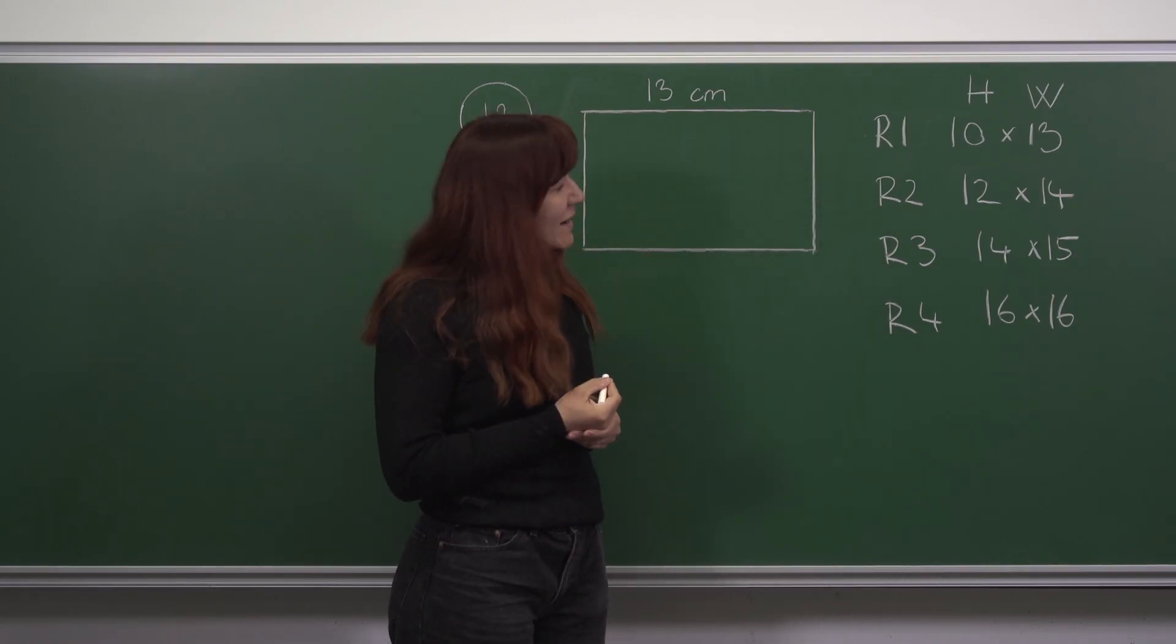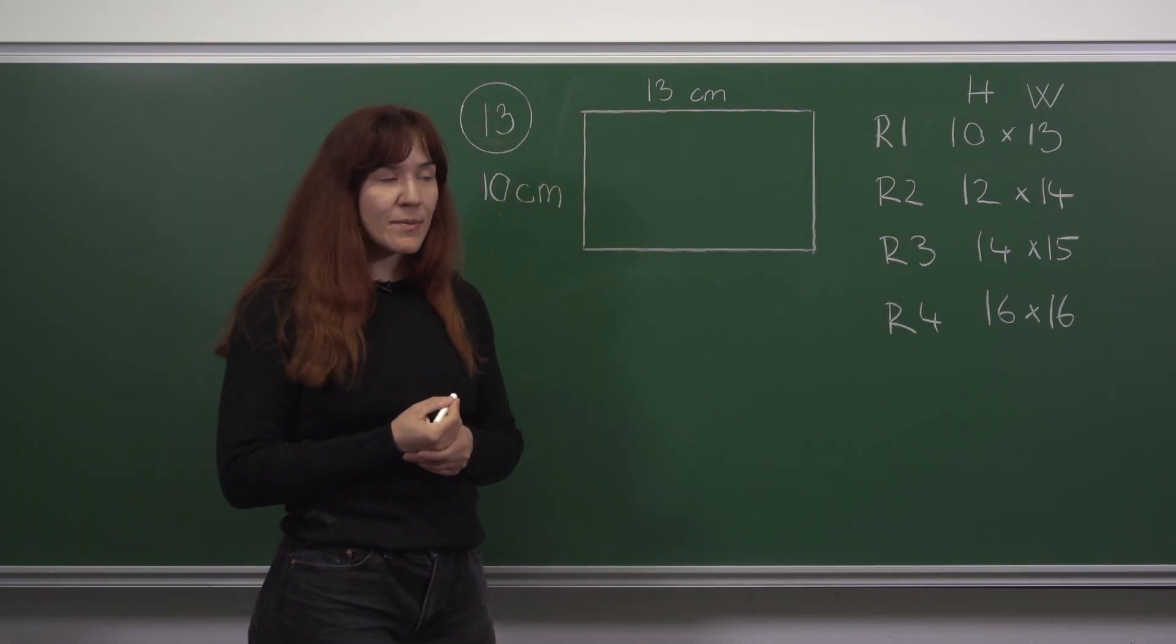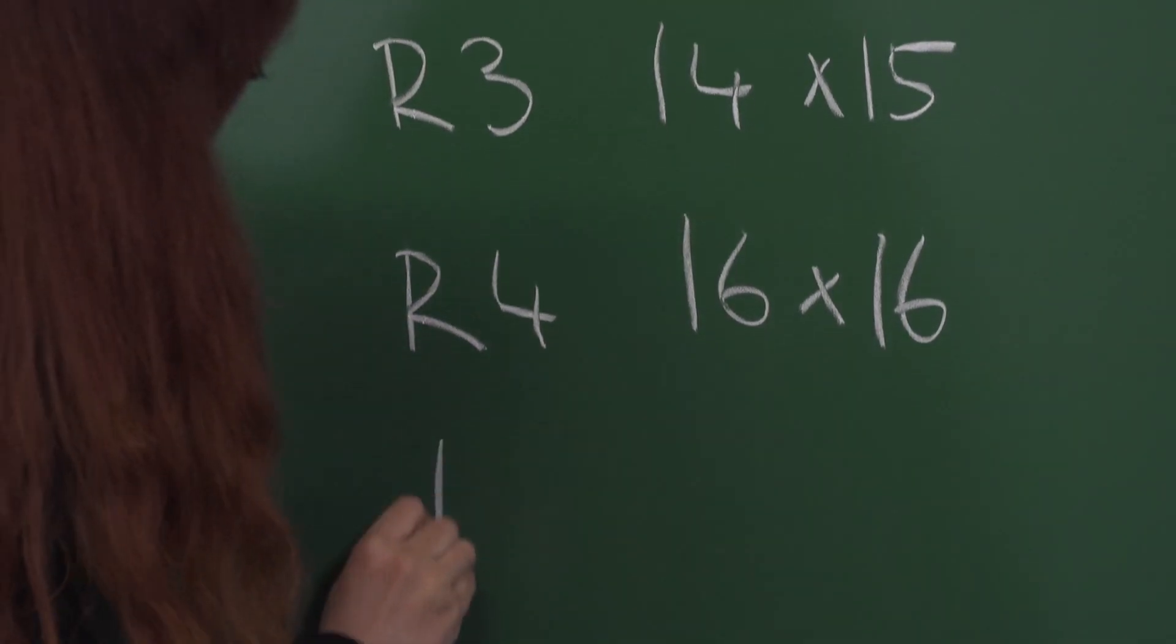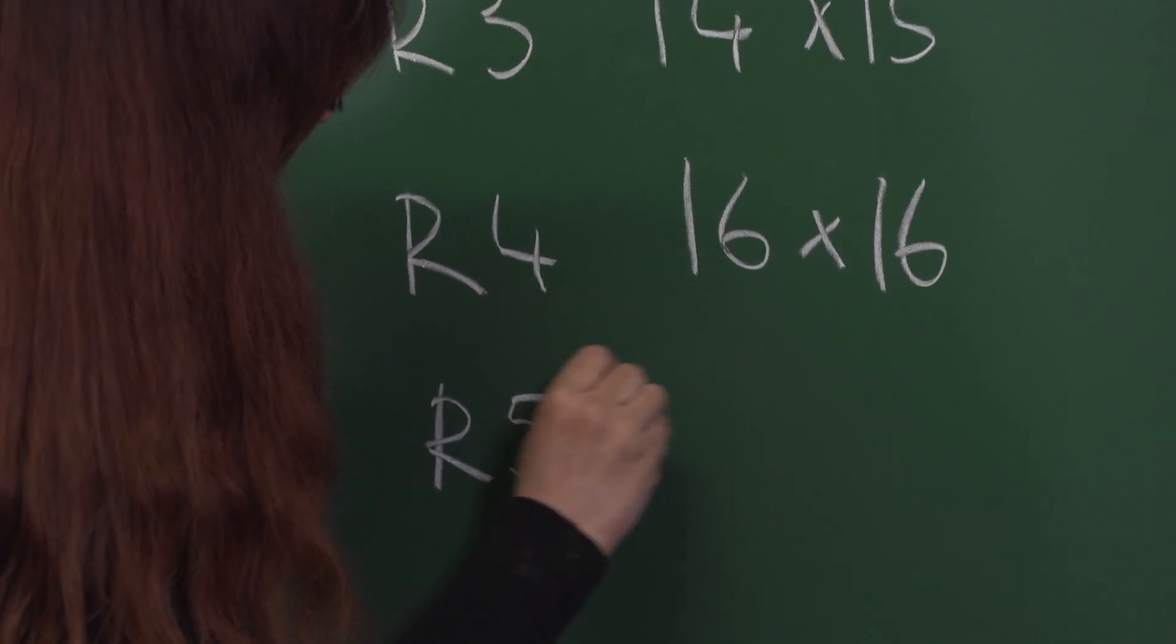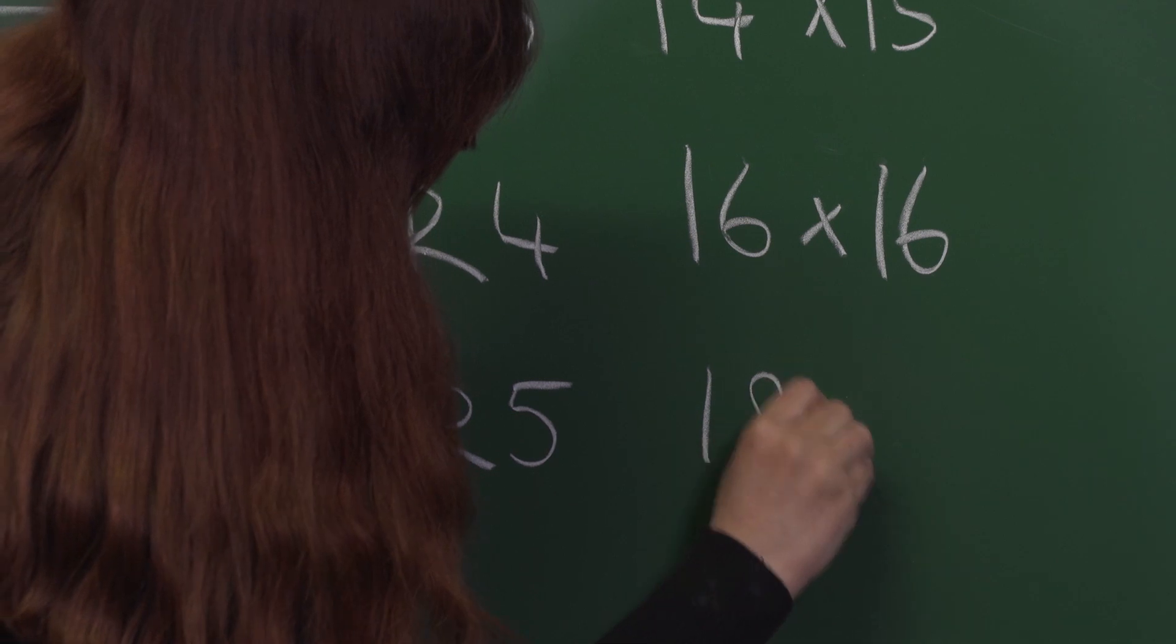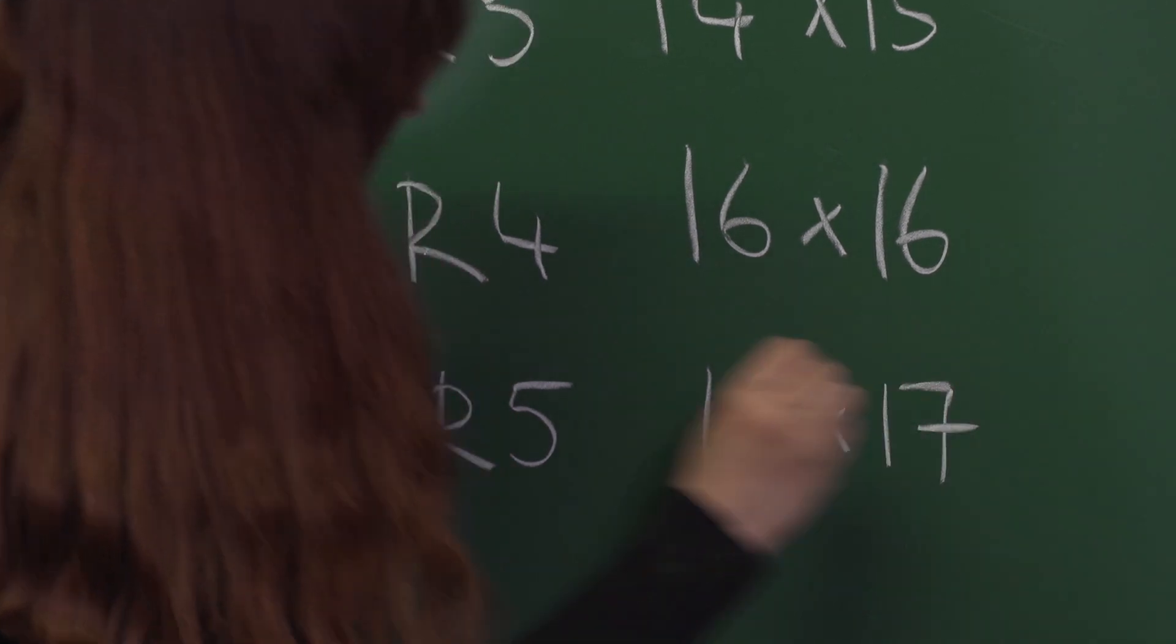Notice that we found our first square, 16 by 16 is a square. The fifth rectangle will have dimensions 18 by 17.